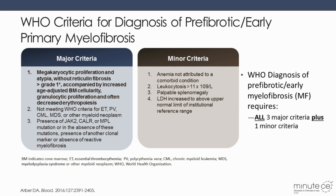Here are the diagnostic criteria for pre-fibrotic early myelofibrosis. There are several major criteria. All three major criteria are necessary for diagnosis of this disease entity. Number one is the most important: a bone marrow biopsy where megakaryocytic proliferation and atypia should be documented without reticulin fibrosis greater than grade one, along with increased age-adjusted bone marrow cellularity, granulocytic proliferation, and often decreased erythropoiesis. These are the key findings in a bone marrow biopsy necessary for diagnosis of pre-fibrotic myelofibrosis.